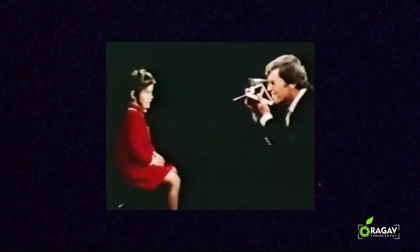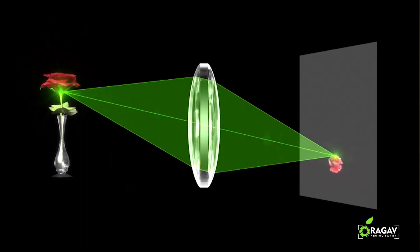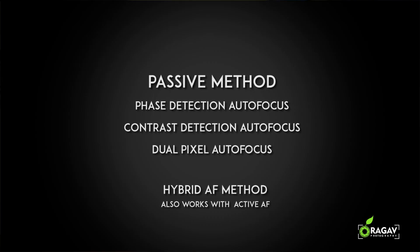You can use IR sensors, laser sensors, or ultrasonic sensors for active autofocus. But there is also the passive method. In the passive method, there is no transmitter — instead, it relies on light reflecting off the subject back to the camera. The light reflects and splits into two parts to determine correct focus. This is the passive method. When using passive autofocus, you can use four different technologies: phase detection autofocus, contrast detection autofocus, dual pixel autofocus, and hybrid autofocus.